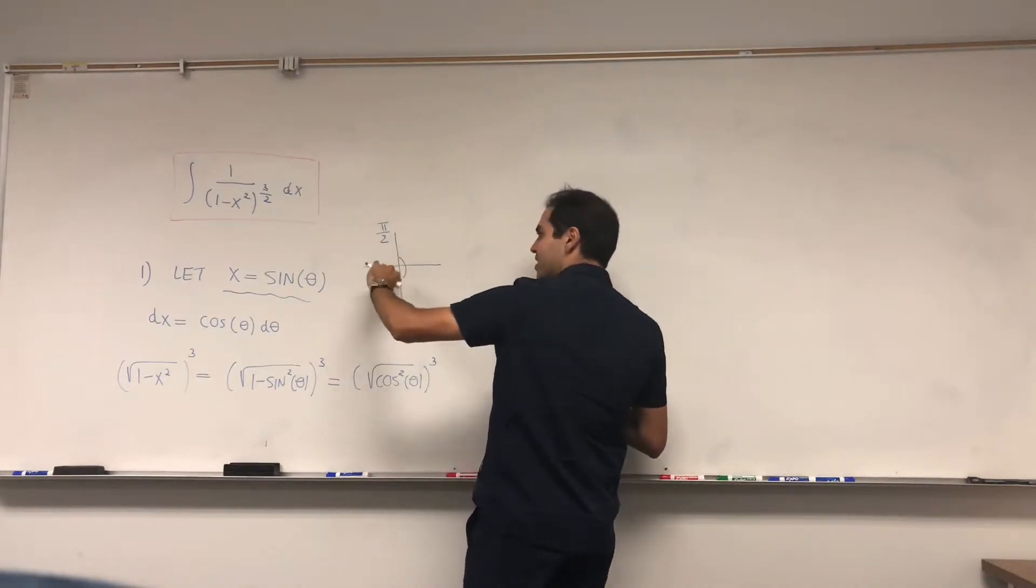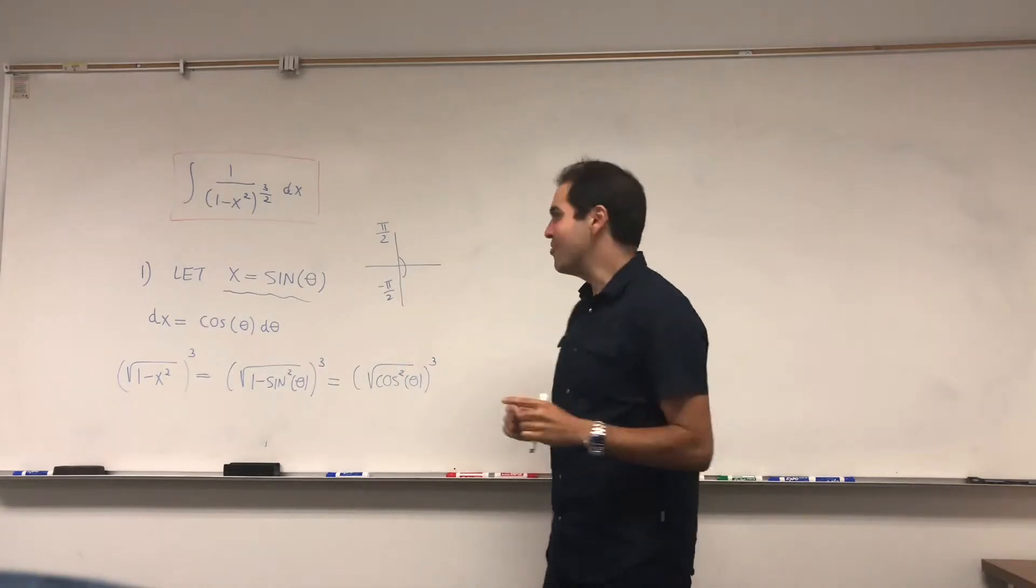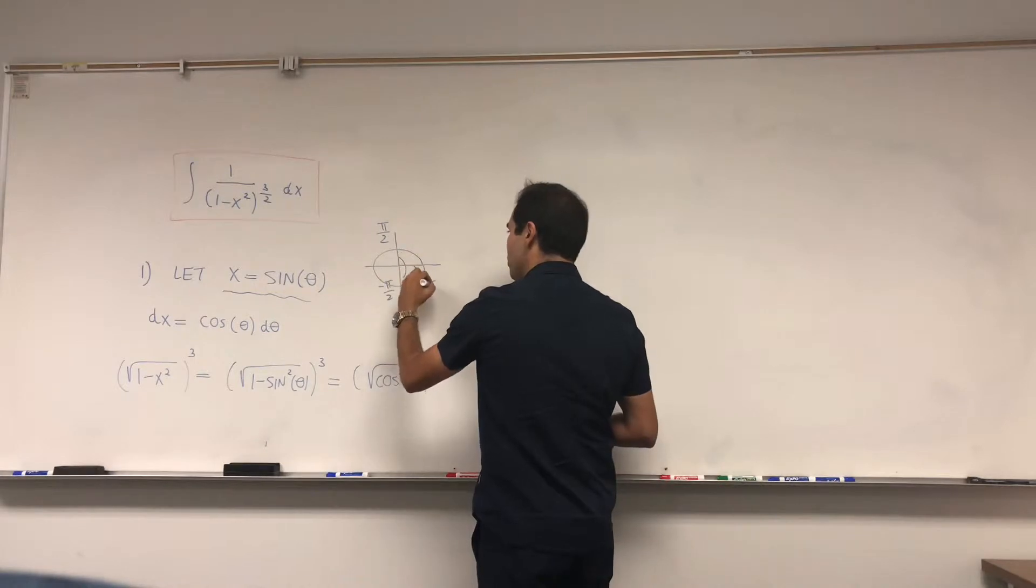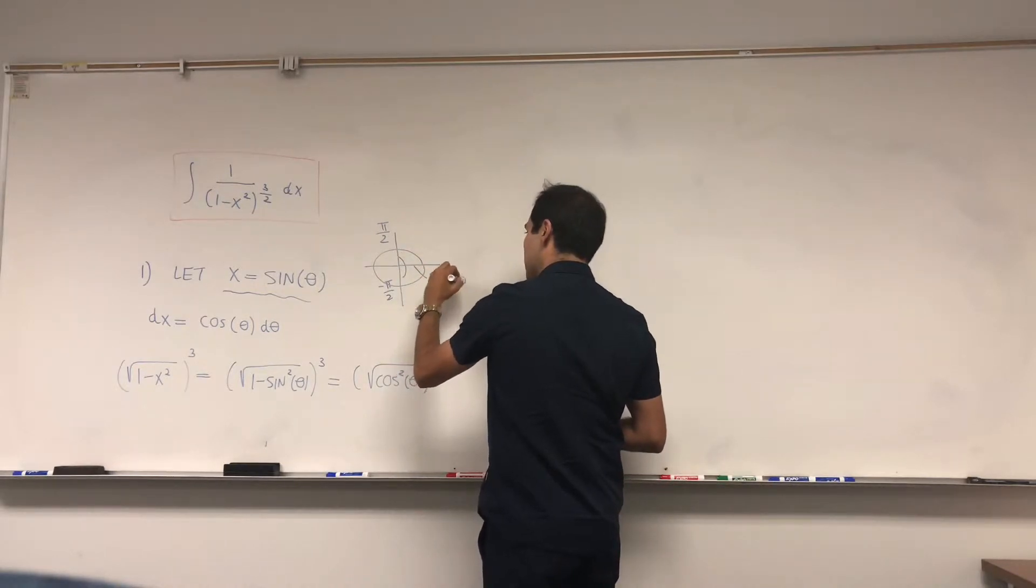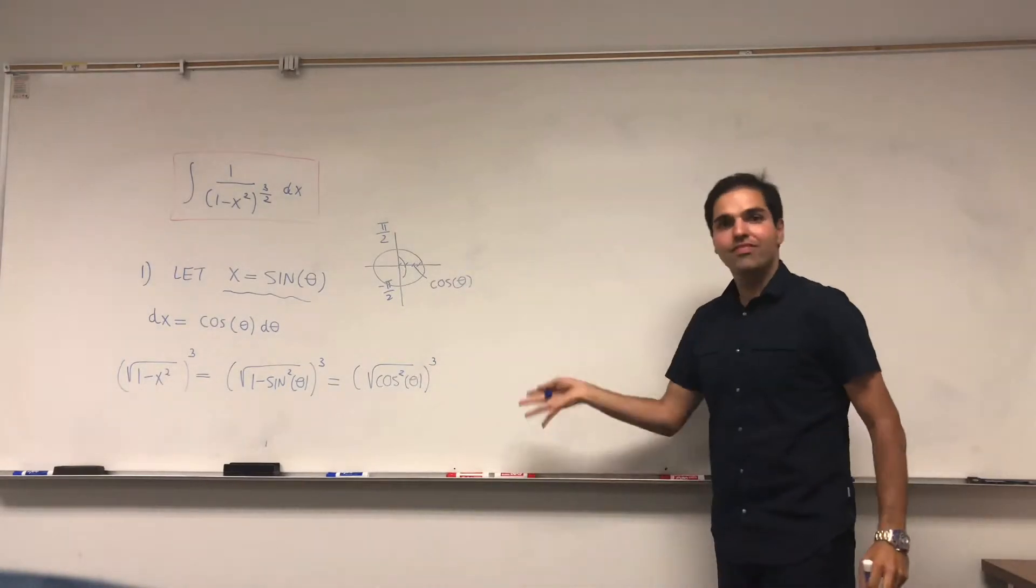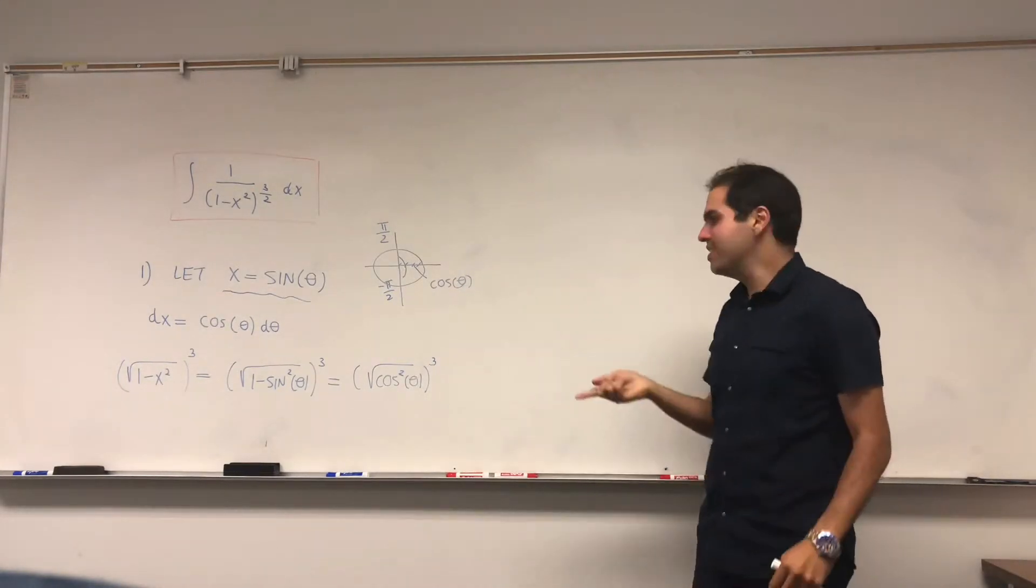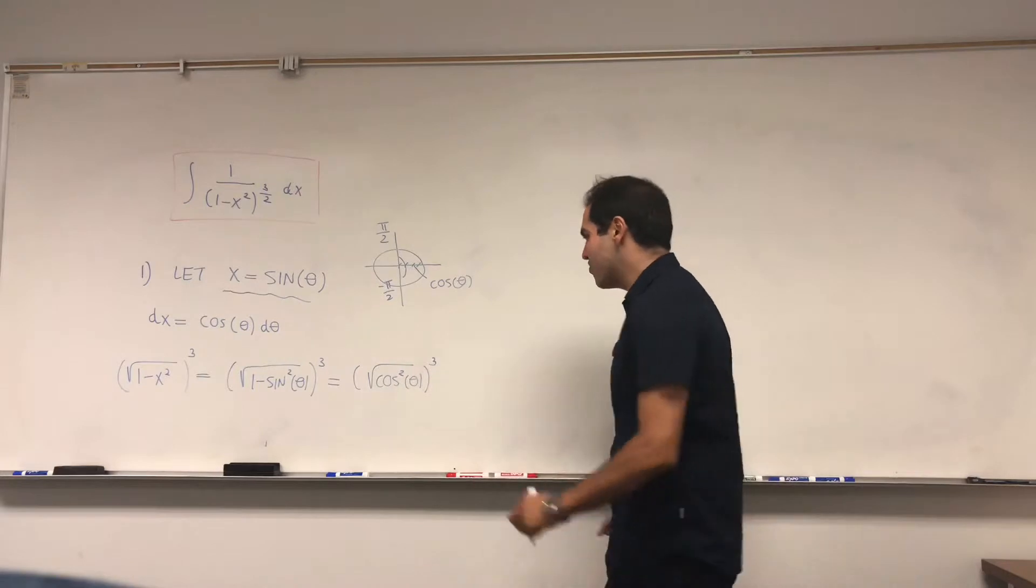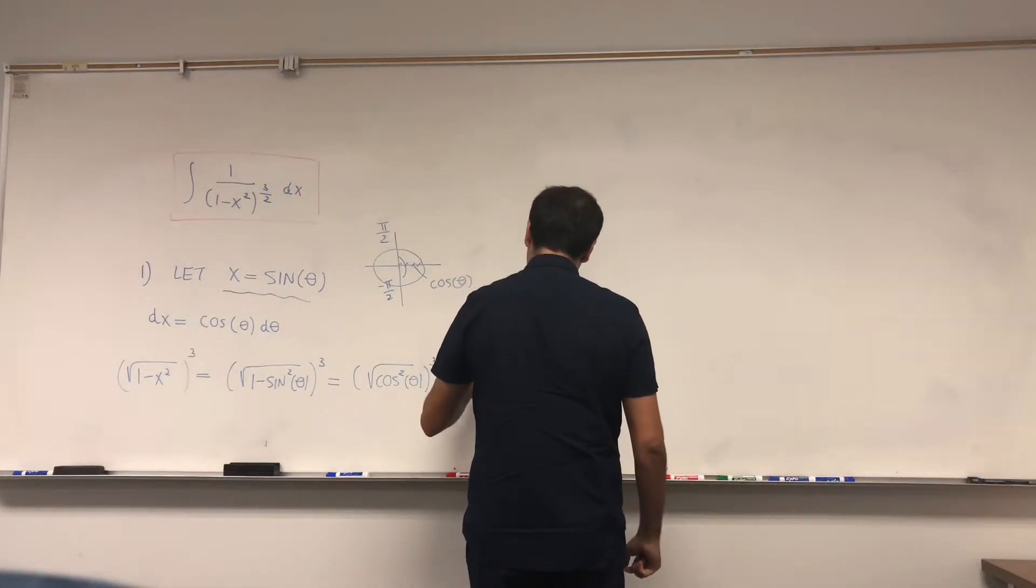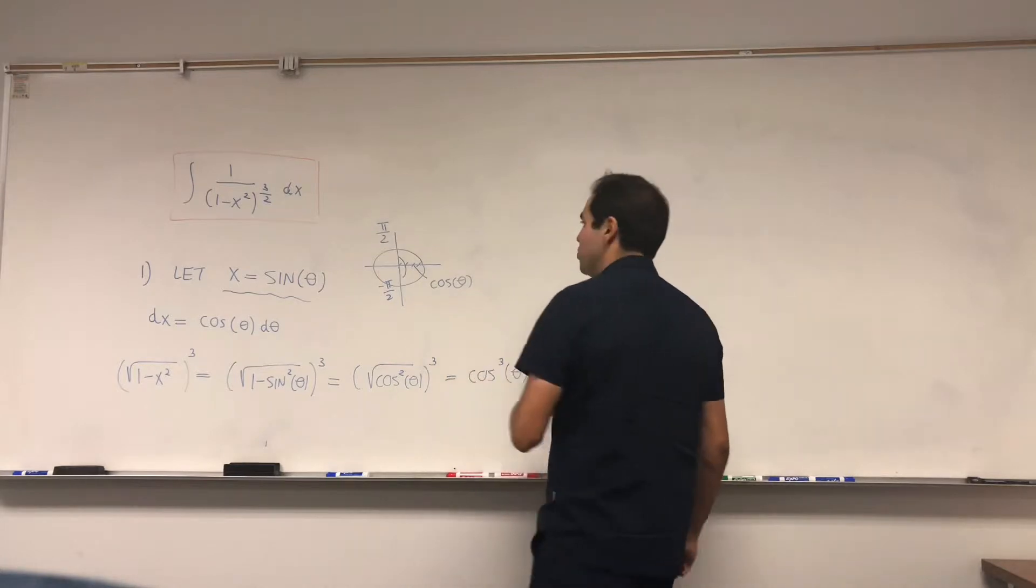Here's where sine doesn't have multiple values. Notice exactly on that interval, cosine of theta is non-negative. In fact, cosine is positive, so square root of cosine squared is really cosine. What you end up with is cosine cubed of theta.